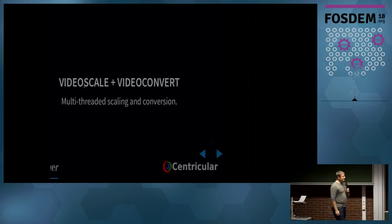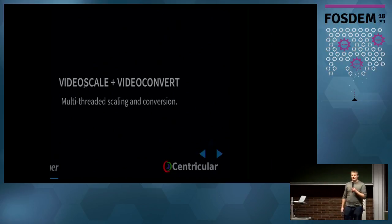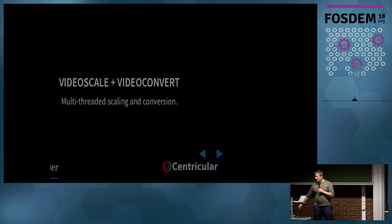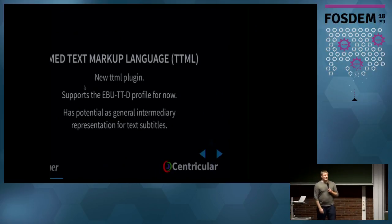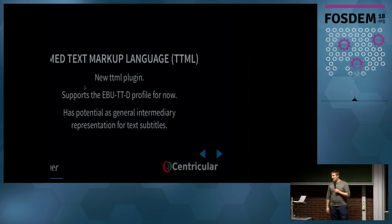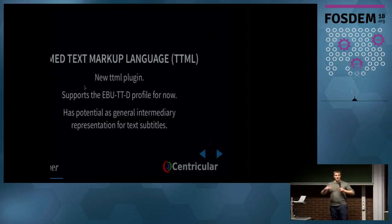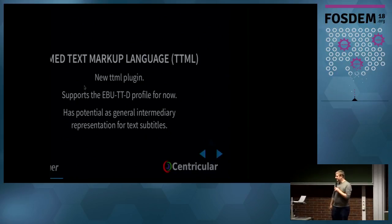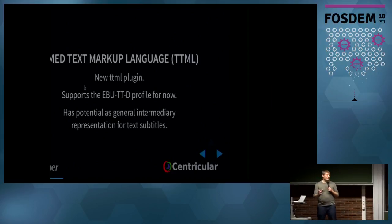What has landed that's interesting: video conversion and video scaling is now multi-threaded. So if you've got high-resolution content, you can spread it over your cores very nicely. Timed Text Markup Language — TTML — there's a new plugin for that. It's a new standard with potential to describe subtitles and text markup generally. We have a plugin for it; it's not enabled for auto-plugging, you have to set an environment variable, but it supports the basic profile at least.